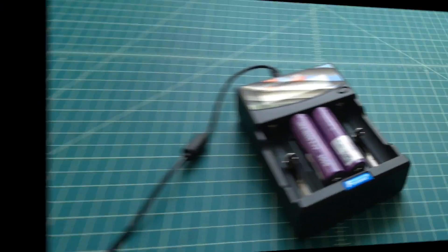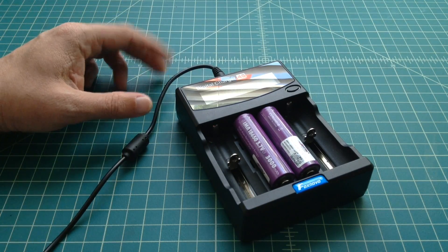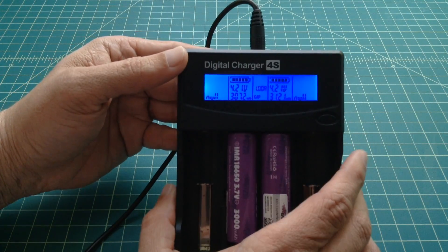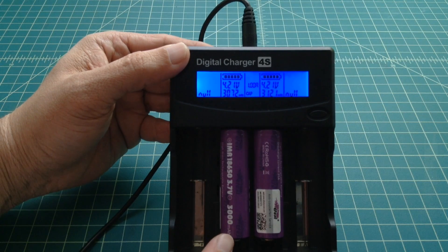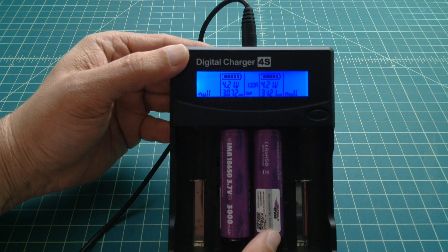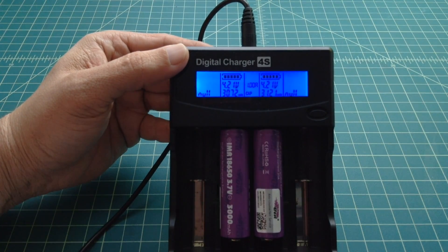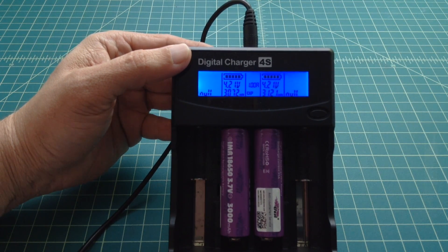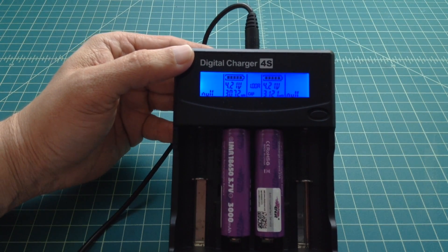All right folks, sorry about the lighting. It's early in the morning and it messes everything up because there's a window here. So here's the charger after the one amp test and we got 3072 milliamp hours here and 3121 here, both fully charged to 4.21 volts. So I'm going to say these things passed. They have the capacity as advertised and I'm happy with them. All right everybody, thanks for watching.